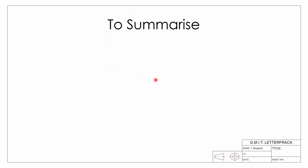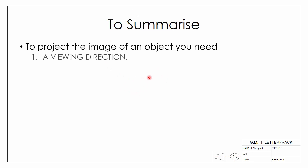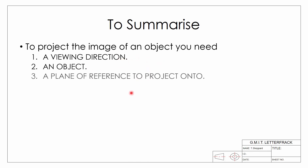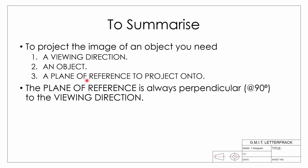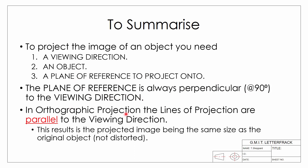To summarize: to project an image you need three components — a viewing direction, an object, and a plane of reference. The plane of reference is always perpendicular, at 90 degrees, to the viewing direction. For orthographic projection, the lines of projection are parallel to the viewing direction, so the image is the same size as the original object. For perspective, lines emit from a single point and spread outwards, distorting the image. This is the first video in our series on orthographic projection — thank you very much.